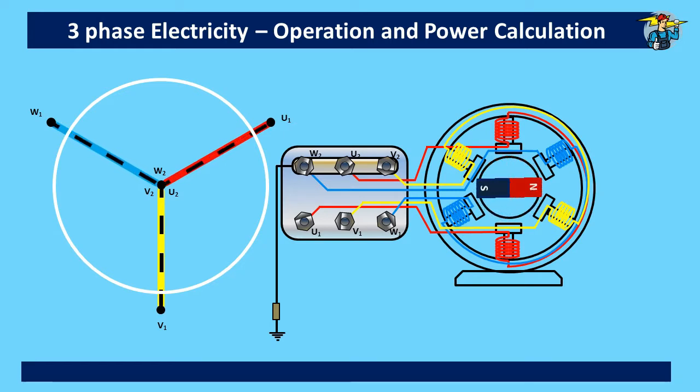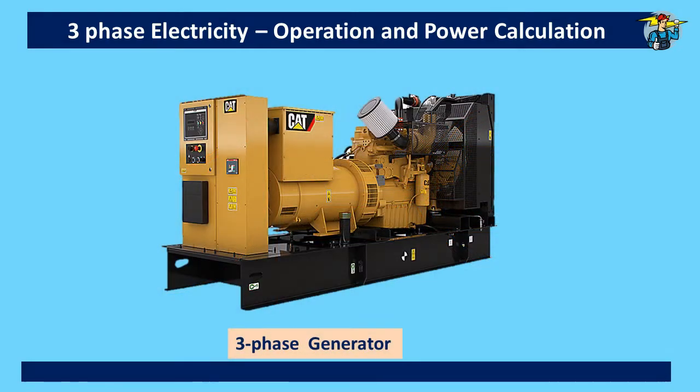We know three-phase power can be supplied to a load through a generator of our own or from a three-phase connection received from an electricity company. Although we take the supply from different sources, the generation part of the main power plants is almost the same and is a generator or an alternator with star connected windings.